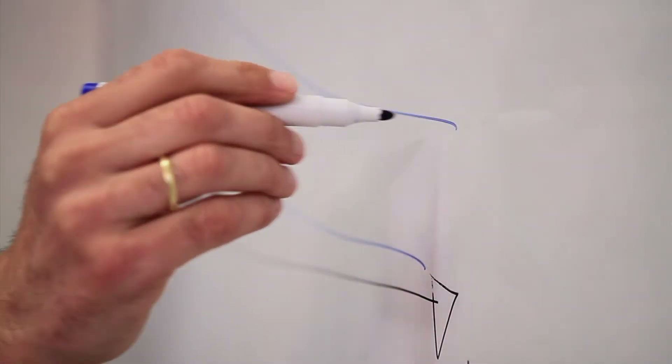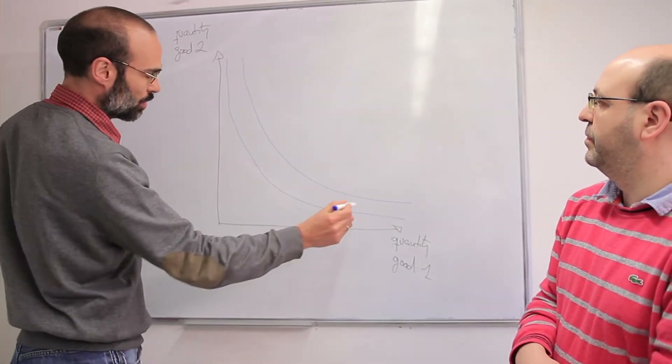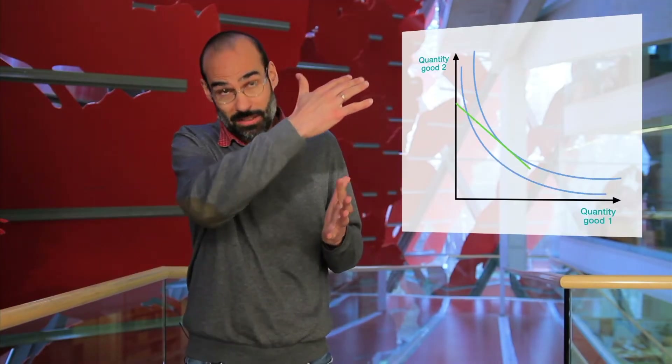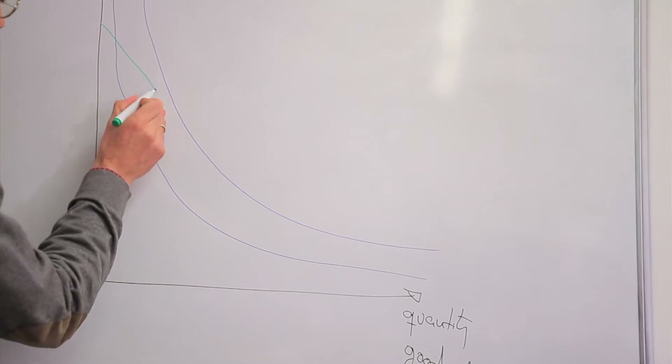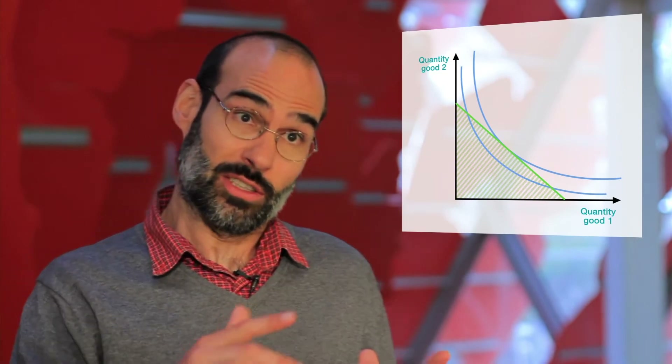The preferences of the individual — the way that we model preferences in this setting — is by way of indifference curves. An indifference curve is all the consumption bundles that the individual equally evaluates. Indifference curves that are farther away from the origin represent consumption bundles that are more preferred. Given the prices of the economy and the income of the individual, this defines the consumption bundles that are affordable, represented by the green triangle.